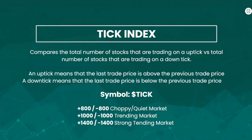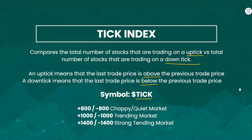Next we have the tick index, ticker symbol TICK. This compares the total number of stocks trading on an uptick by the total number of stocks trading on a downtick. The tick index has no relation to yesterday's close — we are simply looking at upticks and downticks. An uptick means the last trade price is above the previous trade price, whereas a downtick means the last trade price is below the previous trade price. The tick index is very sensitive — it's the ultimate pulse on the market on a second-to-second basis and really only has application on a very short time frame.